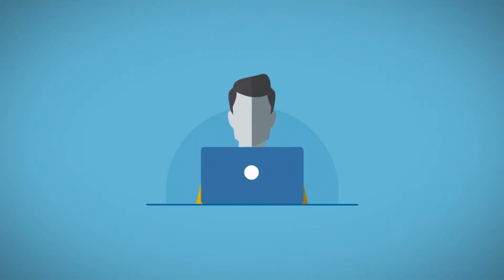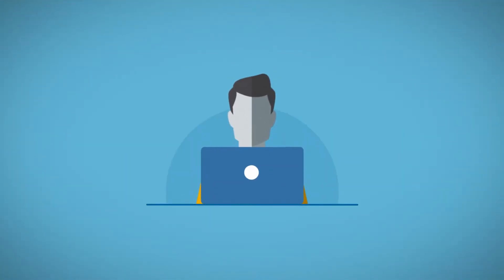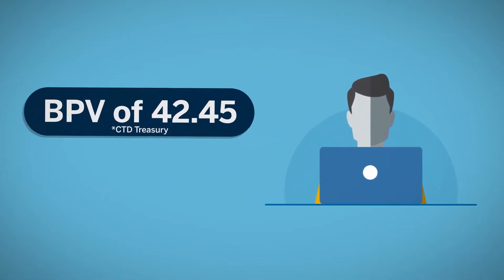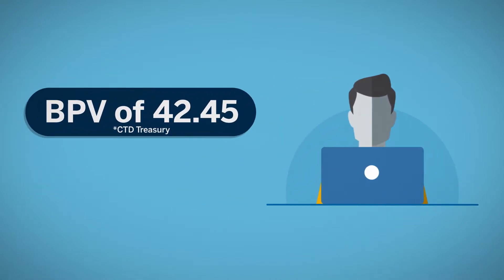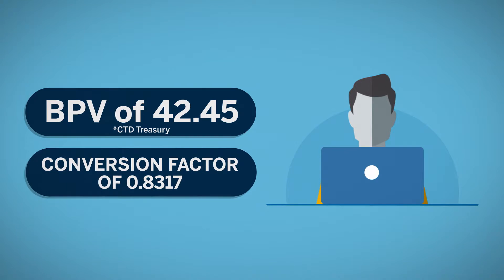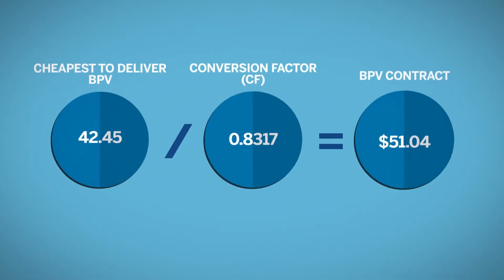We have determined that the 5-year note futures contract has the closest BPV of 42.45 and a conversion factor of 0.8317. The calculation for the futures contract's BPV is the contract's cheapest-to-deliver BPV, divided by that security's conversion factor, or CF.